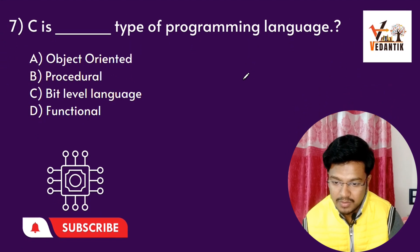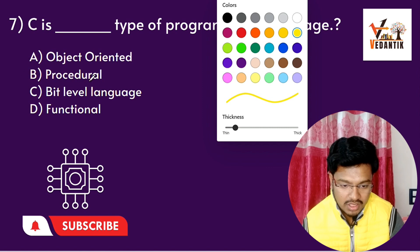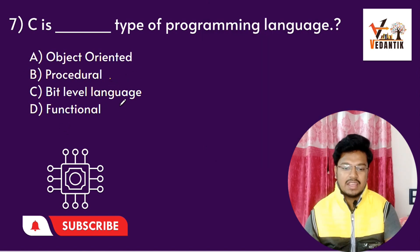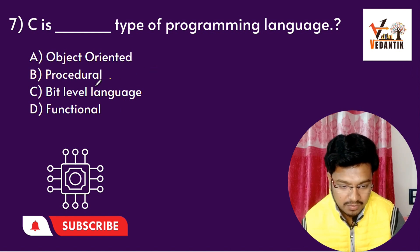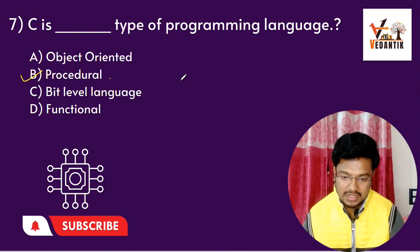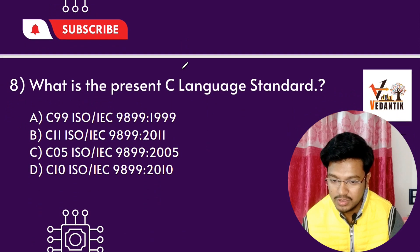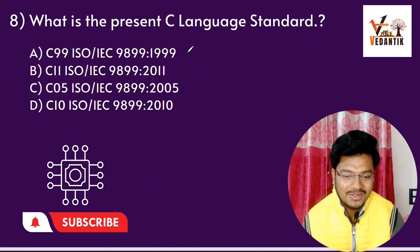Question 7: C is a what type of programming language? Options are: procedure oriented, procedural, bit level language, functional language. C is actually a procedural oriented language. In C, the program is procedural oriented. There is no object-oriented class in C — that comes in C++.